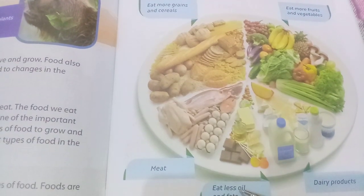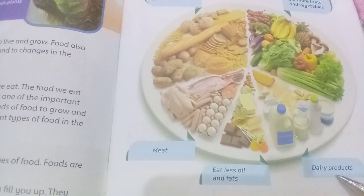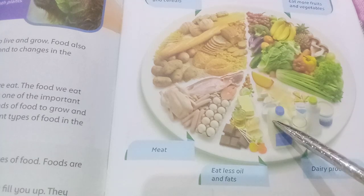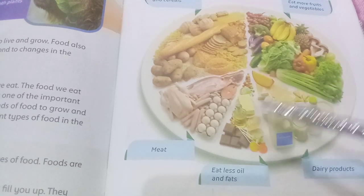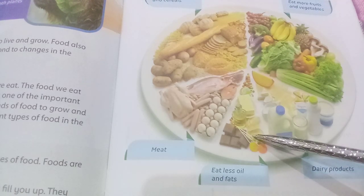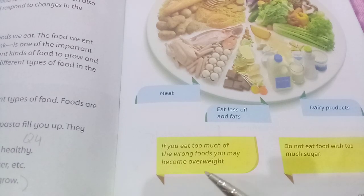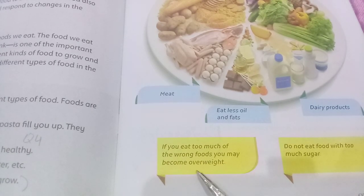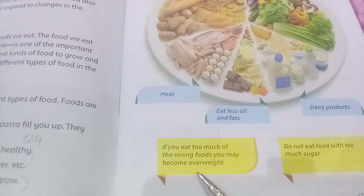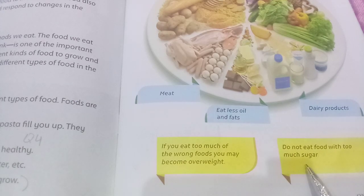Eat less oil and fat — ہمیں چکنائی والی اور oily چیزیں کم کھانی چاہیے۔ سب سے کم جو چیزیں کھانی چاہیے وہ مٹھی چیزیں اور oily چیزیں ہیں۔ If you eat too much of the wrong foods you may become overweight — آپ موٹے ہو سکتے ہیں۔ Do not eat food with too much sugar — بہت زیادہ چینی والا کھانا نہ کھائیں۔